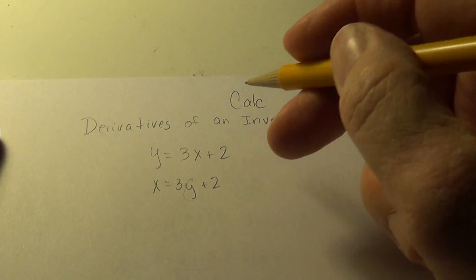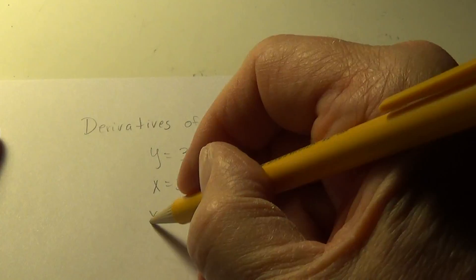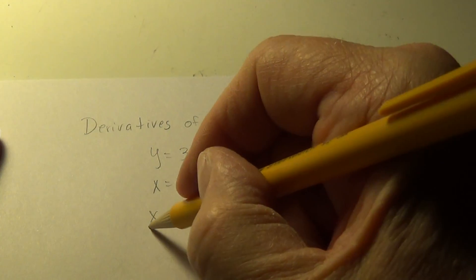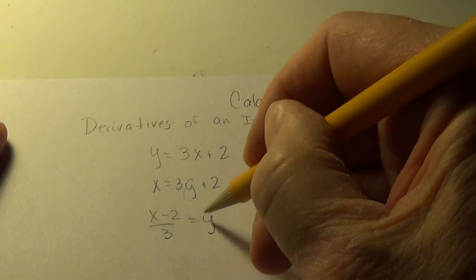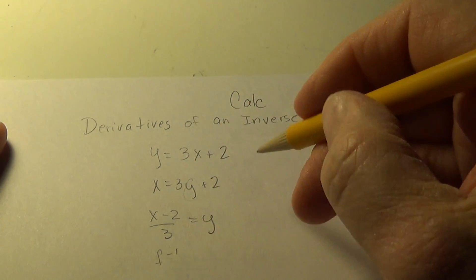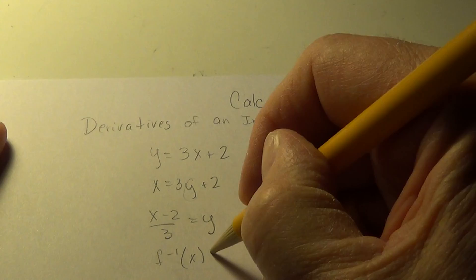Solving for this, we get x minus 2 over 3 equals y. And then we rename that f inverse of x.